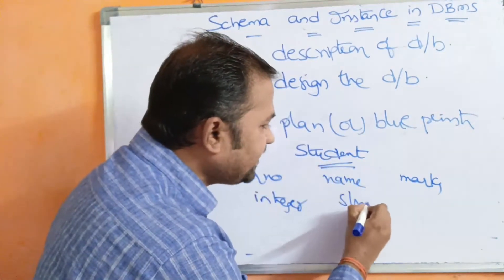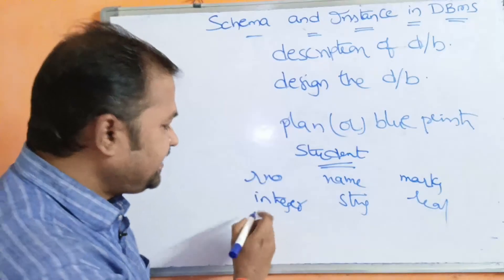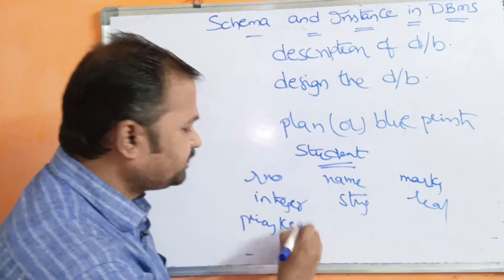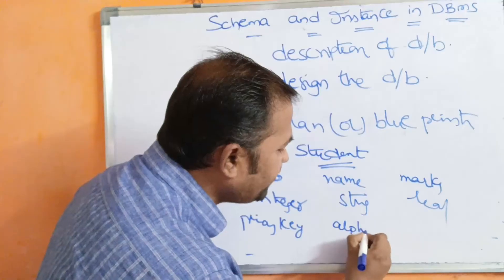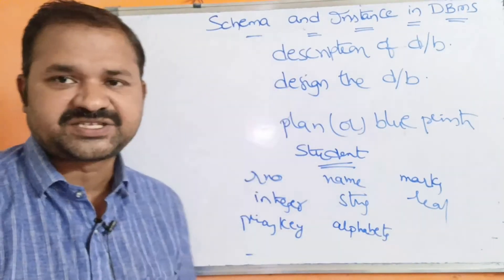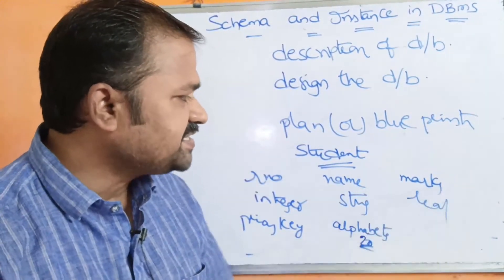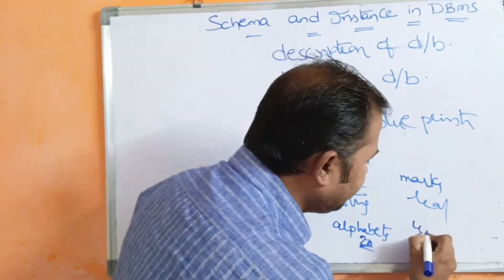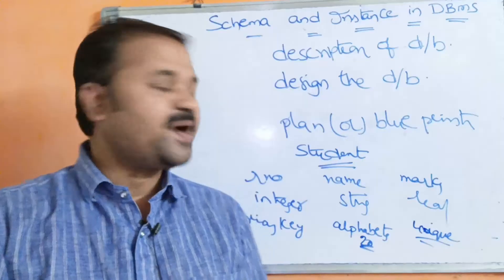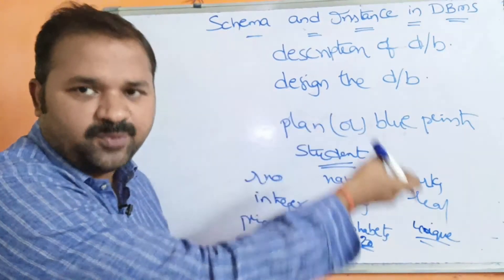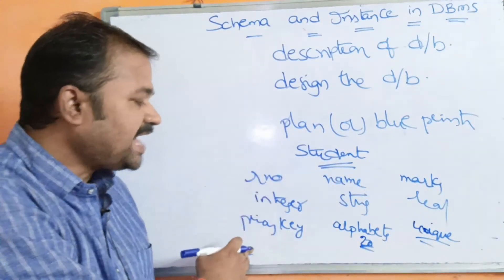Let roll number be of type integer, let name be of type string, and let marks be of type real. We also have to specify the constraints. Here we are applying a primary key constraint. Another constraint is that the name field should accept only alphabets, and the length of the string is 20 characters. Likewise, here we can also impose a unique constraint. So schema means a relation or table name with the fields or columns, data types, and constraints.